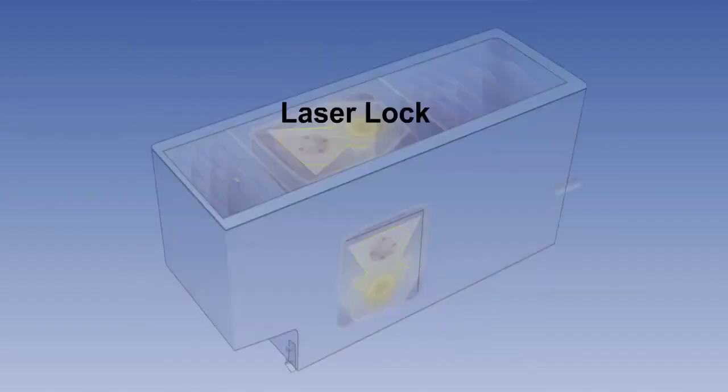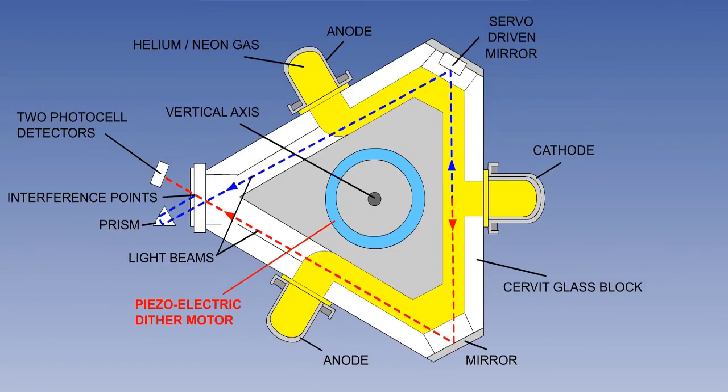One problem associated with the ring laser gyro is called laser lock. The two laser beams can synchronize and, if this happens, they give zero output even when the aircraft is altering its attitude. A piezoelectric dither motor therefore provides a constant input of vibration at a known frequency, which prevents laser lock. The same signal also has to be sent to the computer to tell it to ignore the introduced vibration and simply measure the difference between the dither motor input and the laser gyro output, which is the desired measure of angular rotation.